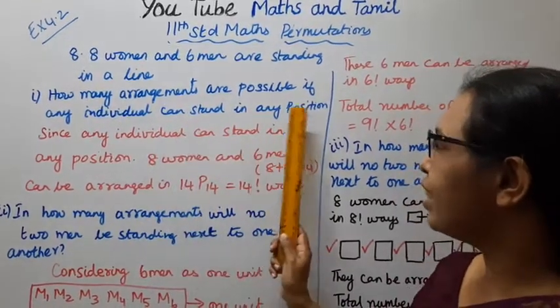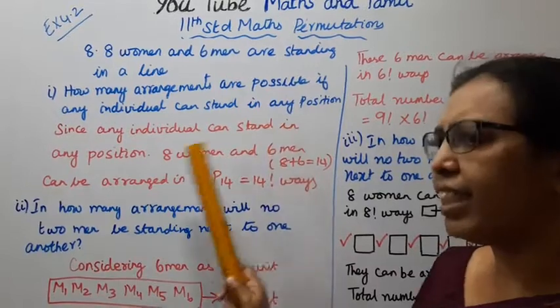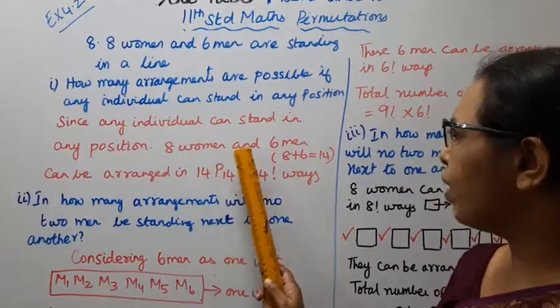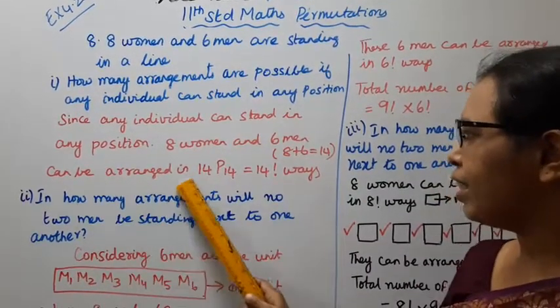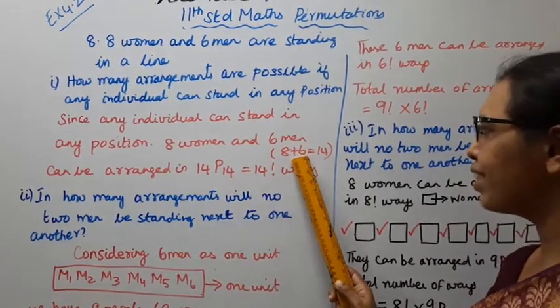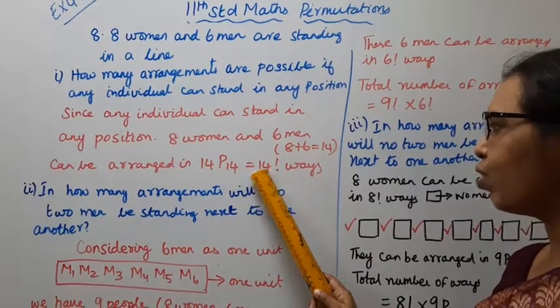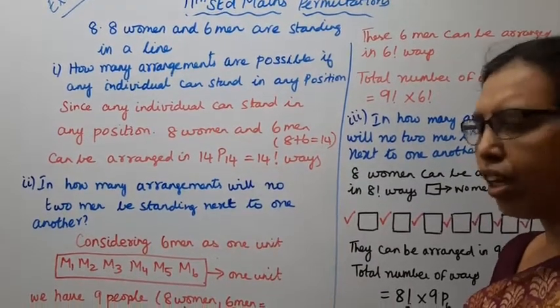can stand in any position? Since any individual can stand in any position, 8 women and 6 men can be arranged in 14P14. 8 plus 6 equals 14. 14P14, that is equal to 14 factorial ways.